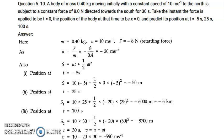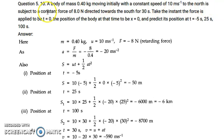Let's talk about Question 5.10. A body of mass 0.4 kg moving initially with a constant speed of 10 meters per second to the north is subject to a constant force of 8 N directed towards the south for 30 seconds.